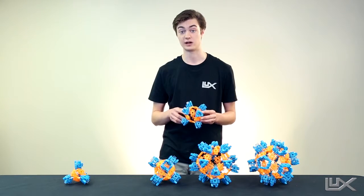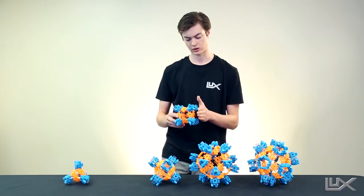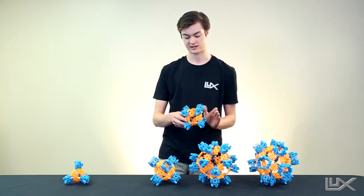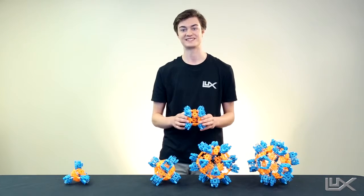We also call a hexahedron a cube. This may not look like an obvious cube to you, but if you look closely, you can see there are six sides and they're all at 90 degrees with each other. Alright, let's get started.